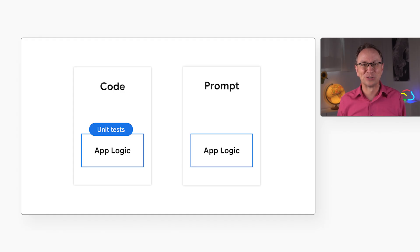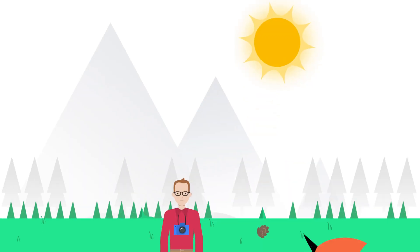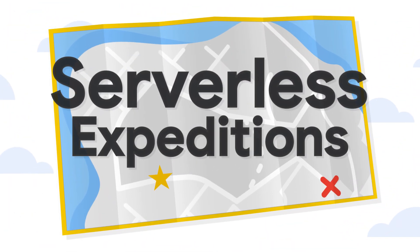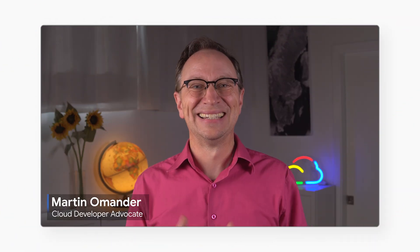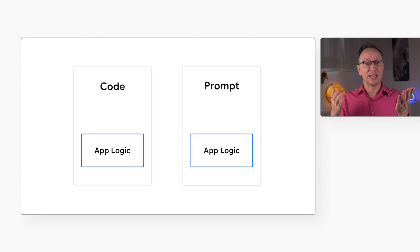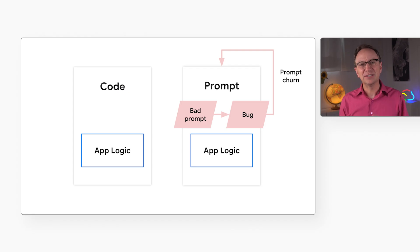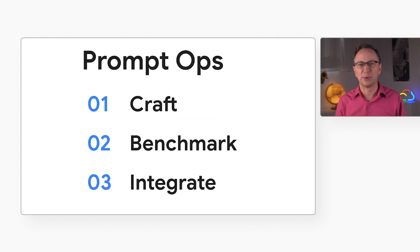Let's do it with some powerful tools from Google. I'm Martin. These days our app logic lives in both code and prompts. But a bad prompt leads to bugs and what I call prompt churn, where we're just aimlessly changing prompts.